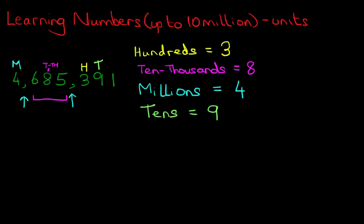Suppose the question asks: how many thousands are there in this number? The thousands come immediately to the left of the first comma. This is the first comma, and this one must be the thousands. There are five thousands.